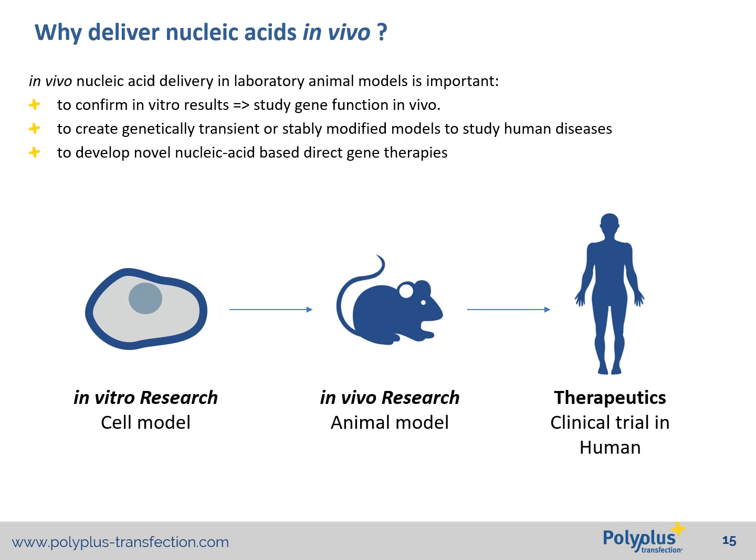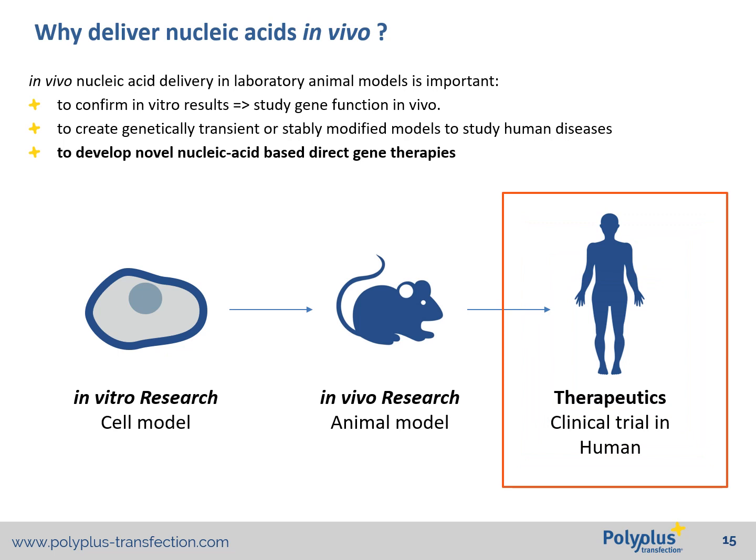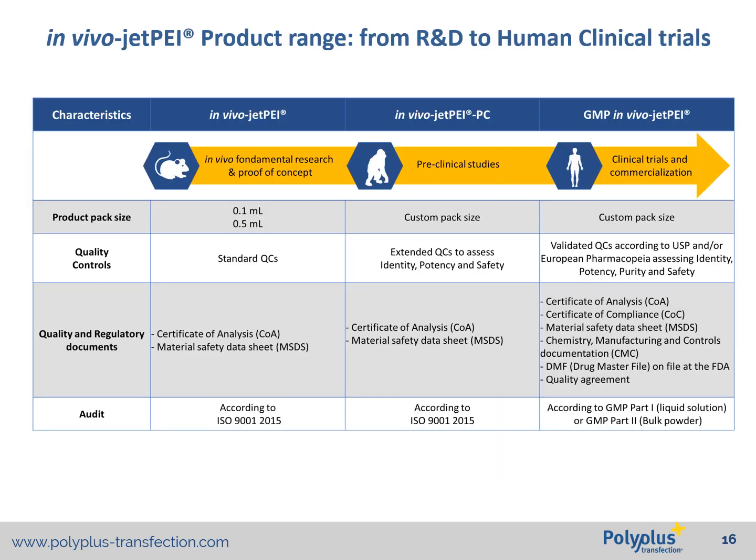I've now given you an overview of what can be achieved at the animal model level to confirm in vitro results and to create genetically transient models to study human diseases. Now I would like to focus on in vivo delivery of nucleic acids as a novel promising approach for gene therapy. In vivo-jetPEI is the most widely used chemical reagent to deliver nucleic acids in animals, and therefore it is selected as the delivery vector of choice in several drug development programs.